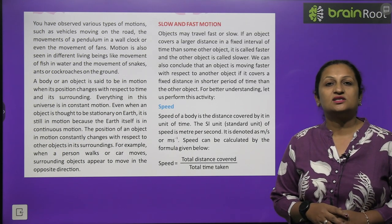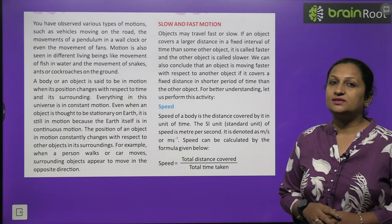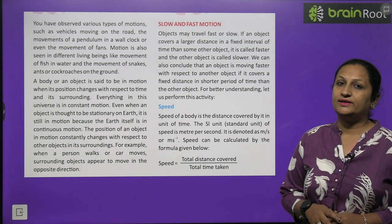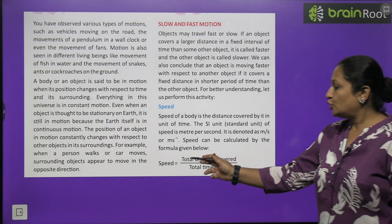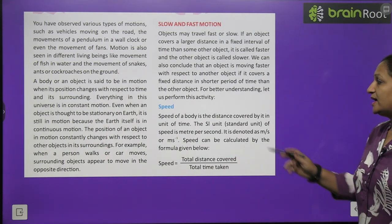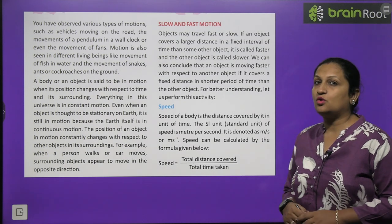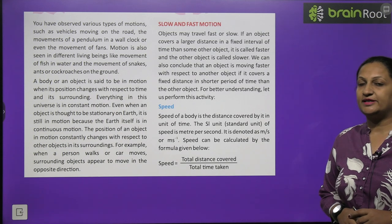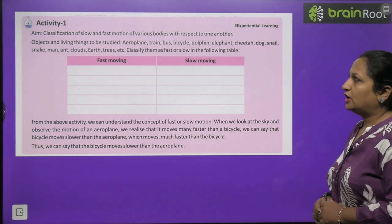Now, speed. Speed is the distance covered in a unit time — how much distance we travel in unit time is called speed. The formula for speed is: speed equals total distance covered divided by total time taken. The SI unit of speed is meter per second. Distance is measured in meters and time in seconds, so the unit becomes meters per second.